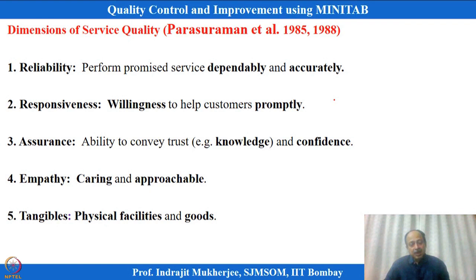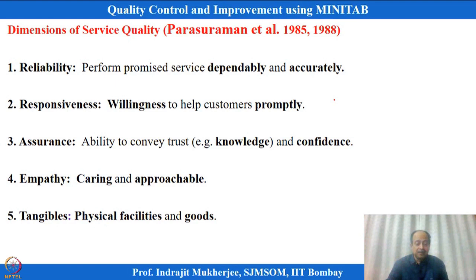The fifth dimension is tangibles — when delivering service, some physical goods or environment are also delivered. For example, when you go to a restaurant, you see the environment created — the lights and surroundings — those are the tangible aspects you can see and feel. To improve service quality, you must improve all five dimensions. Parasuraman defined these dimensions based on extensive surveys and interviews.